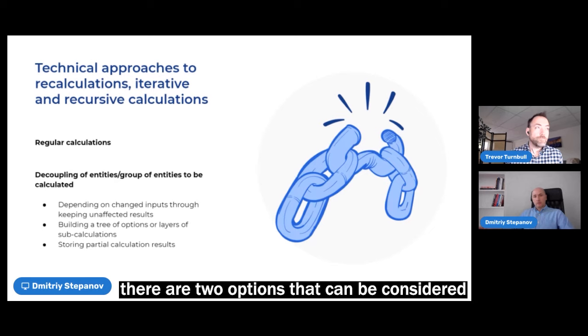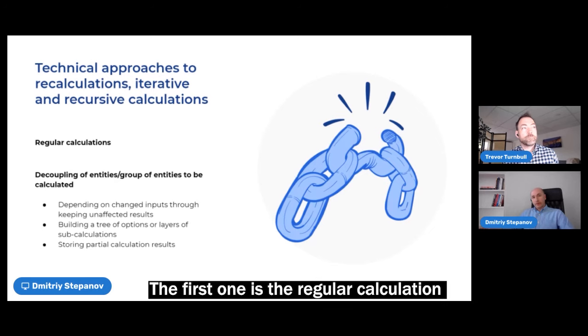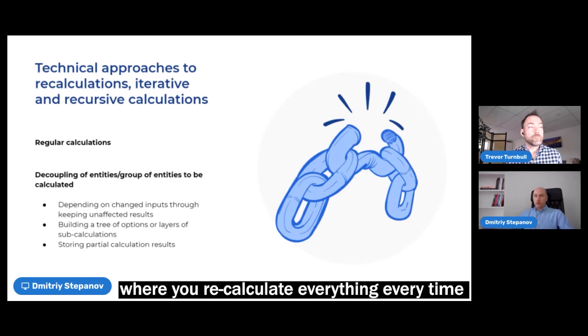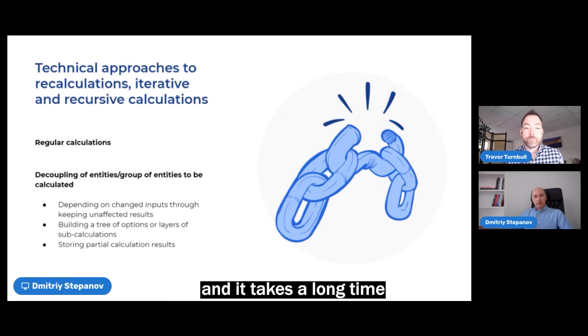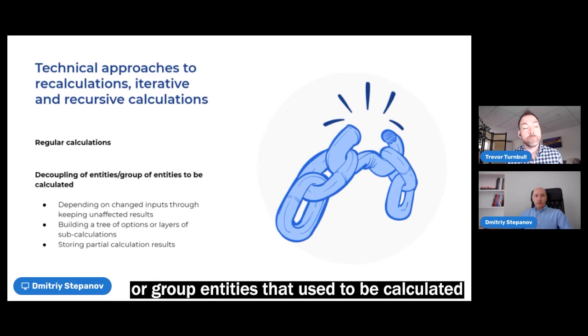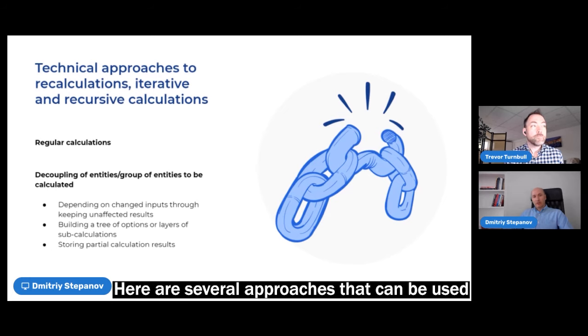The first one is a regular calculation where you recalculate everything every time and it takes a long time. Another one, you try to decouple entities or group entities that needs to be calculated. Here several approaches that can be used.